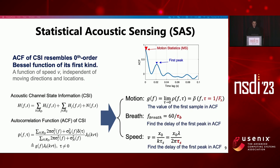Let's build a statistical acoustic sensing model from scratch. For complex environments, the measured channel state information is contributed by both static and dynamic components. Based on statistical theory, the ACF of CSI is equivalent to a Bessel function. This leads to three conclusions: the amplitude of ACF corresponds to the motion statistics; the first peak of ACF corresponds to the moving speed; and if a human breathes in the environment, the first peak of ACF corresponds to his breathing rate.